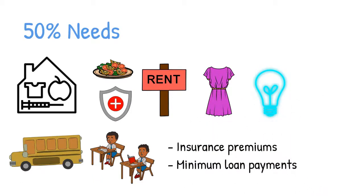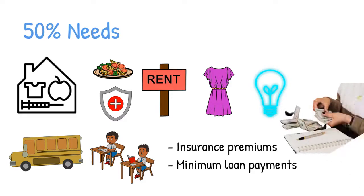The needs also include insurance premiums and minimum loan payments. While the needs budget may differ from household to household, Senator Warren advises that you can tweak things around. It may mean changing grocery suppliers, utility service providers, and housing.